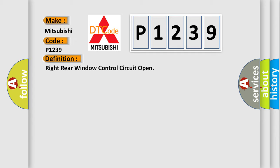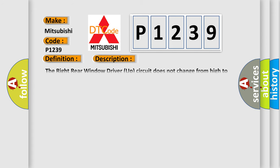And now this is a short description of this DTC code. The right rear window driver up circuit does not change from high to low during a window movement command.